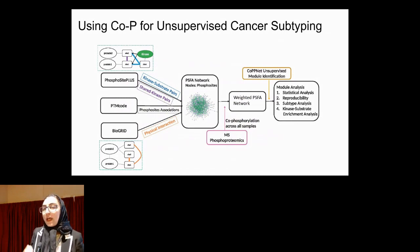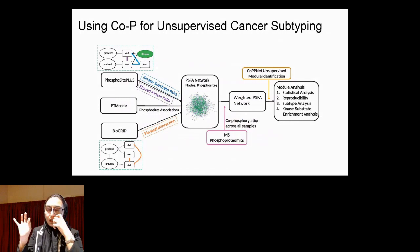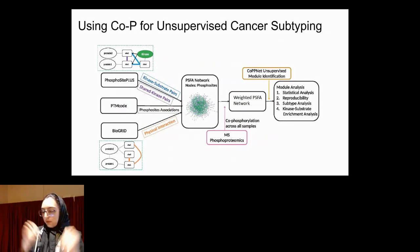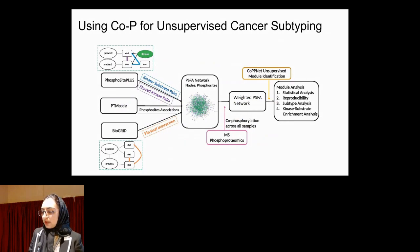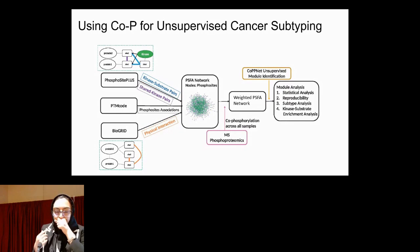We then assign weights to the edges of this network derived from mass spectrometry-based phosphoproteomic data using correlation. We assign the correlation between every pair of endpoints as the weight of the edge, resulting in a weighted phosphosite functional association network. We then apply our module identification algorithm, which we call COCNET, to extract modules from this network.